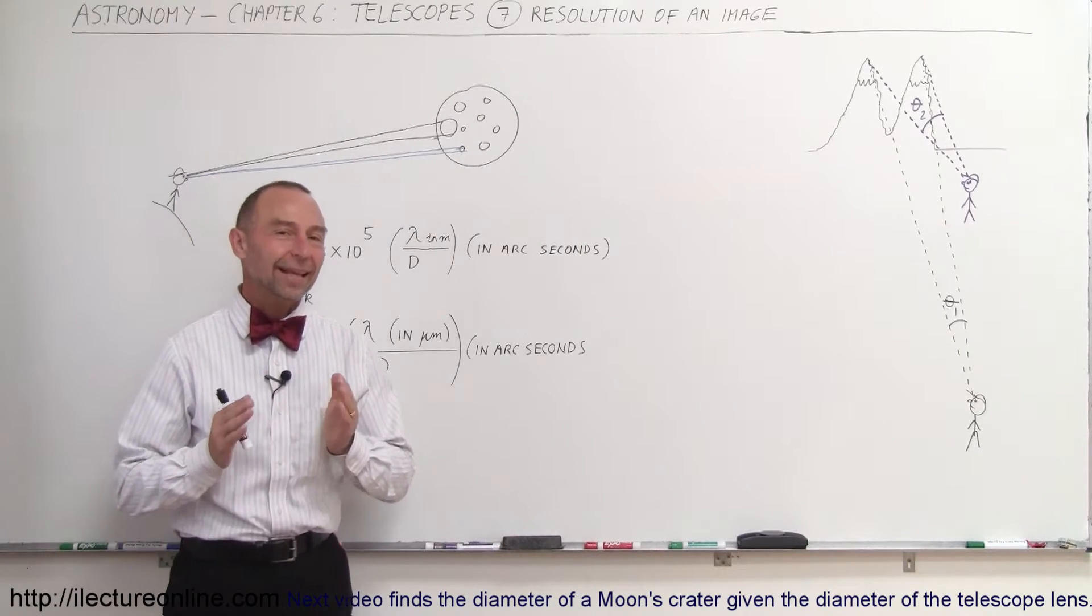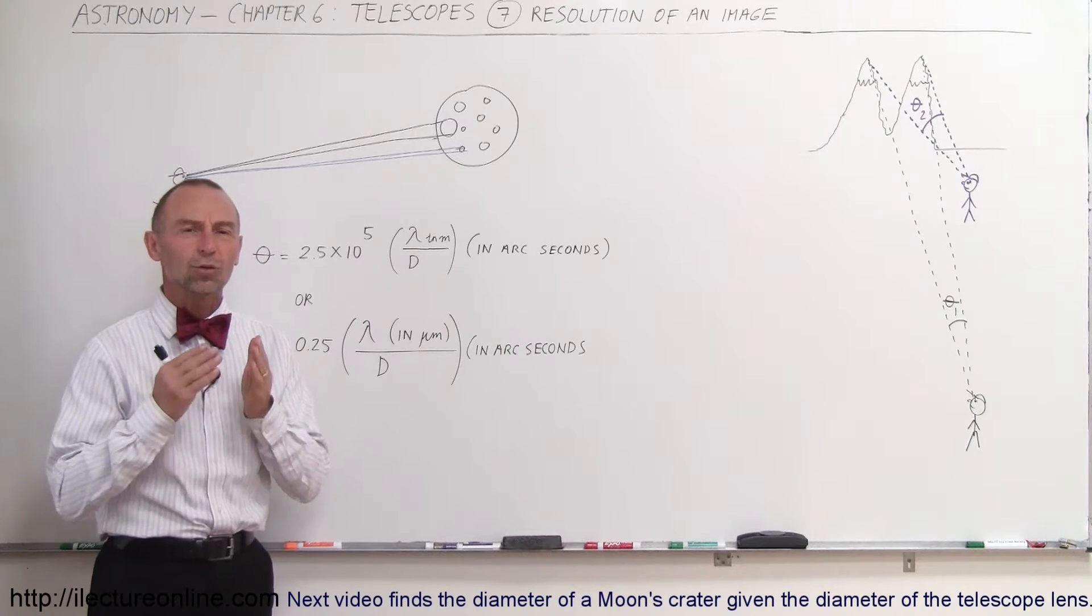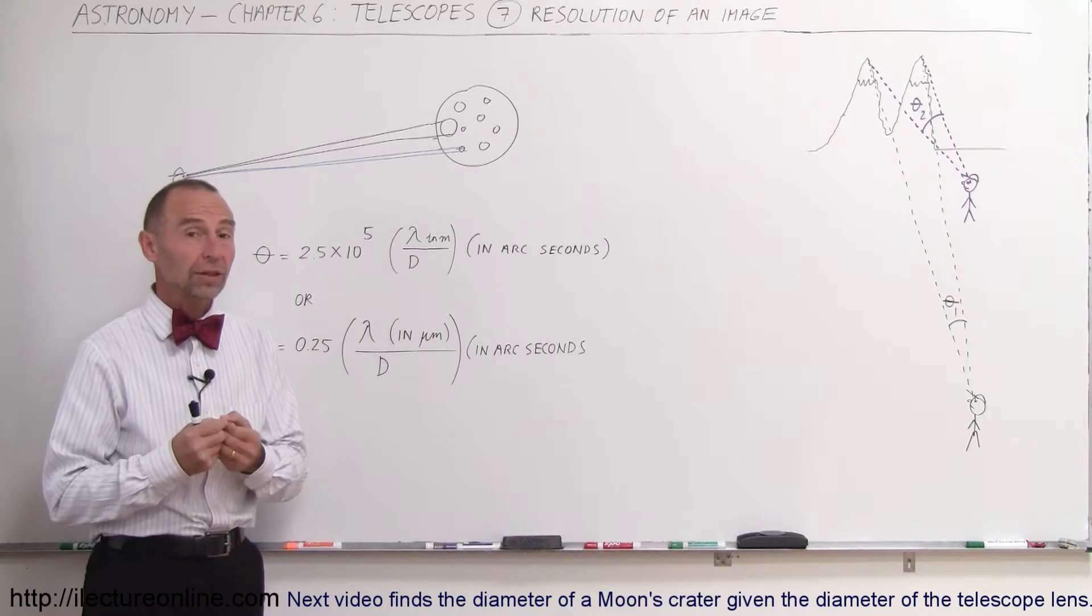Welcome to Lecture Online. Now, the next very important aspect of a telescope is its ability to resolve things. It's called the resolution of the telescope.